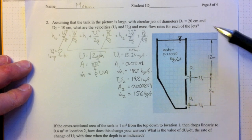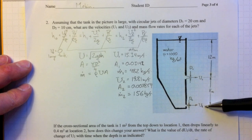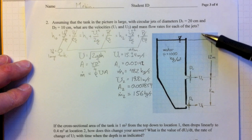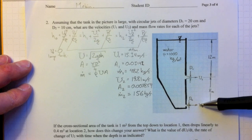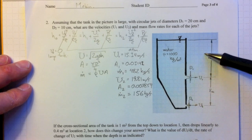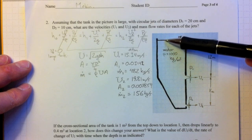And the question is, what are the velocities U1 and U2, and what are the mass flow rates for each of those two jets? So we can write Bernoulli's equation along a streamline from some location H0 up here,